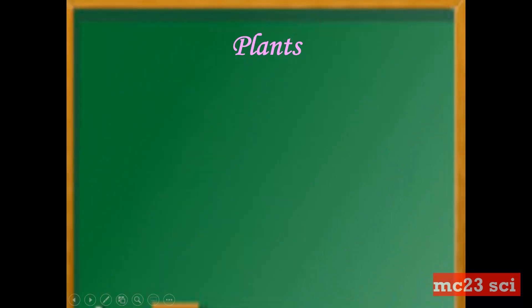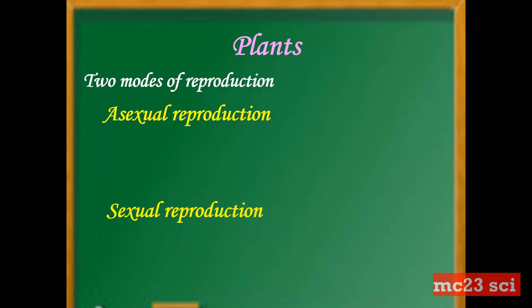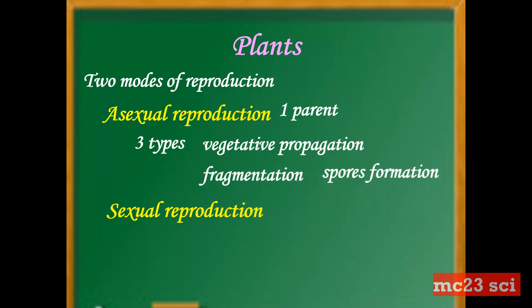The reproductive parts in plants have two modes of reproduction: asexual reproduction and sexual reproduction. In asexual reproduction, it needs only one parent to reproduce its own kind. The three types of asexual reproduction are vegetative propagation, fragmentation, and spore formation.